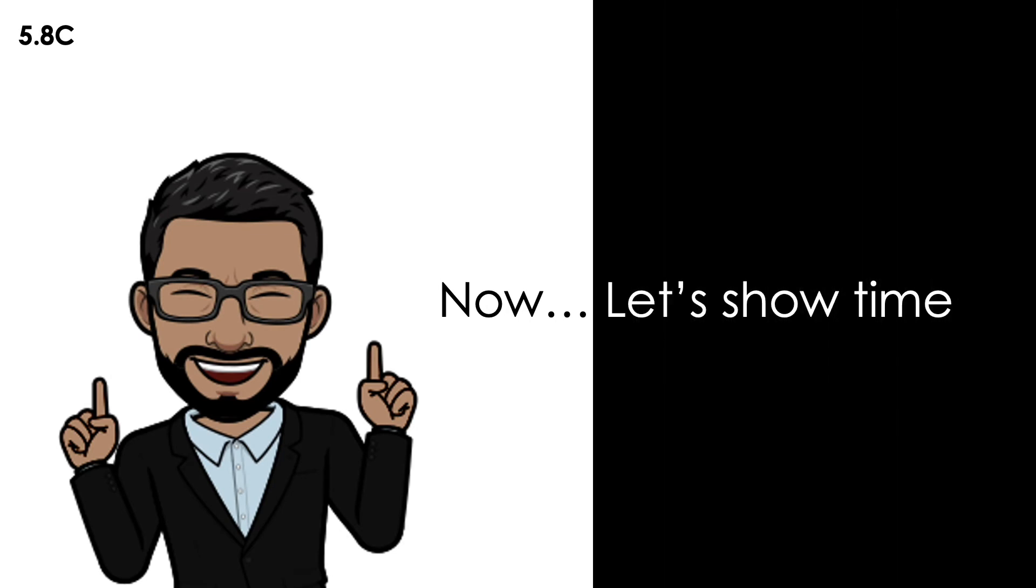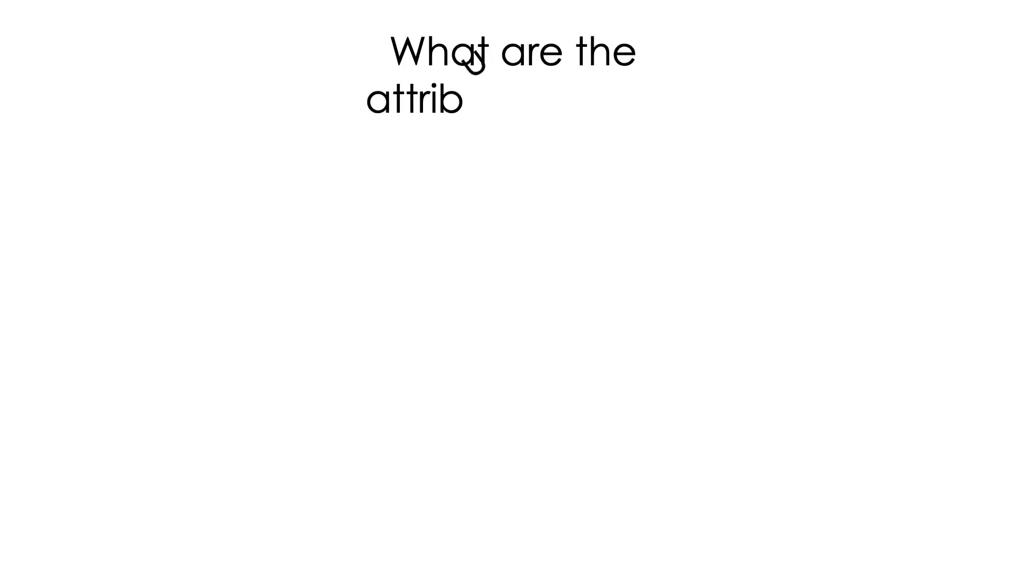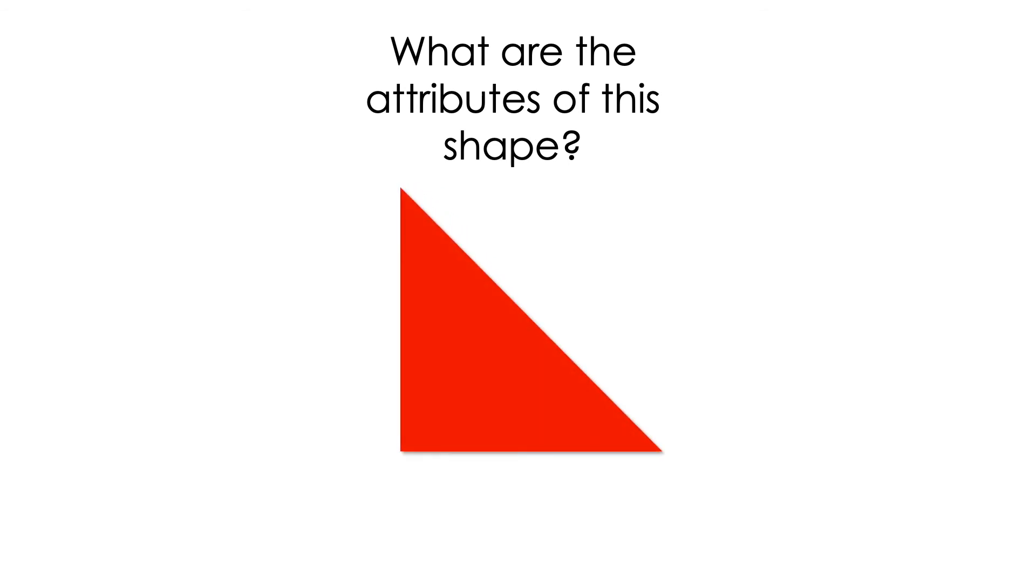Let's show time. What are the attributes of this shape? We know that it's a two-dimensional figure. It's also a polygon. If we talk about the sides, it has three sides. That means that it's a triangle. Because it has three sides, it also has three vertices.